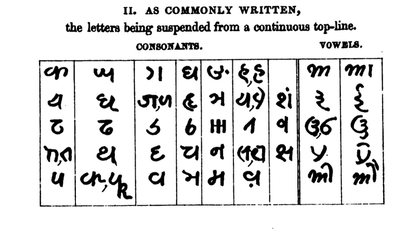Kaithi was also nicknamed Shakasta Nagari, due to its relationship with Devanagari being akin to the relationship between the widely used Shakasta Nastaliq of the time and the more formal and fully expressive printed Nastaliq scripts.